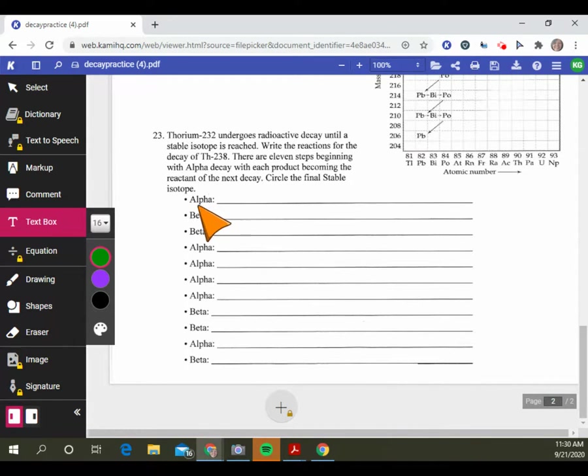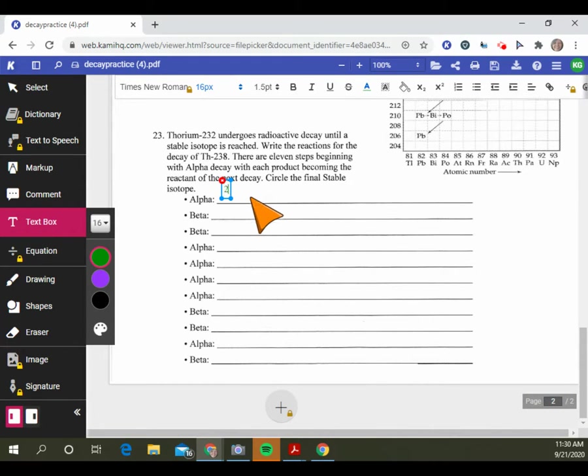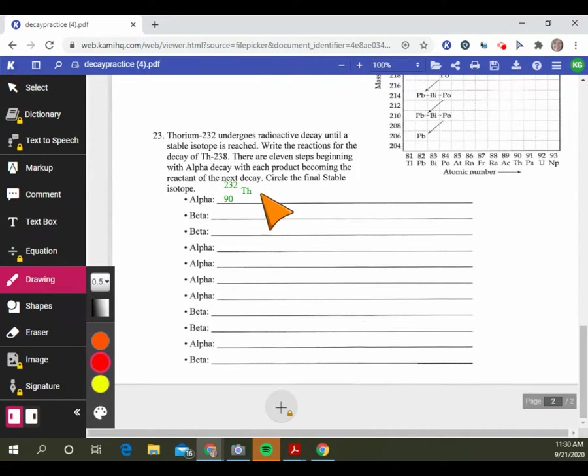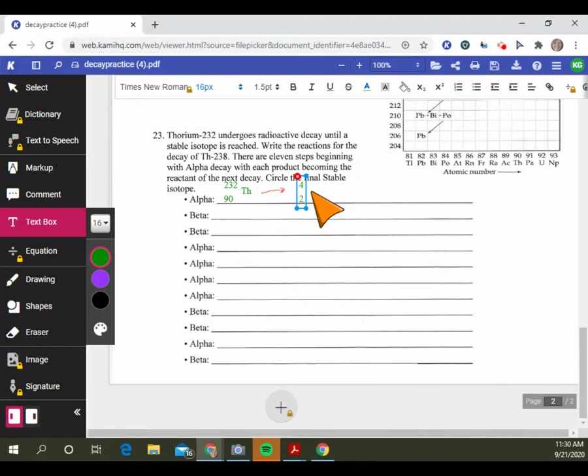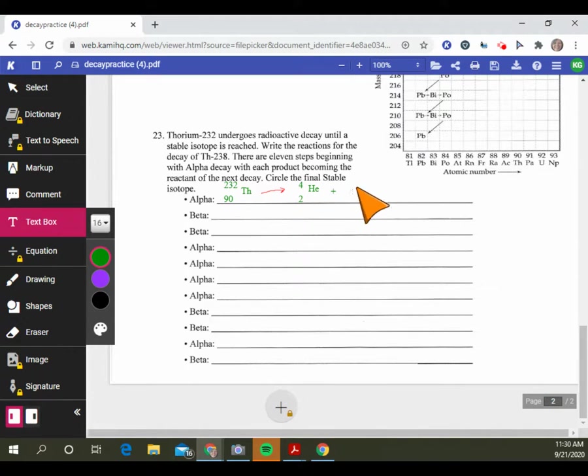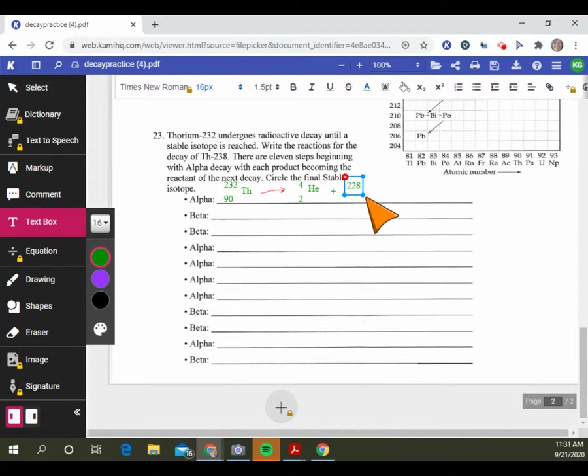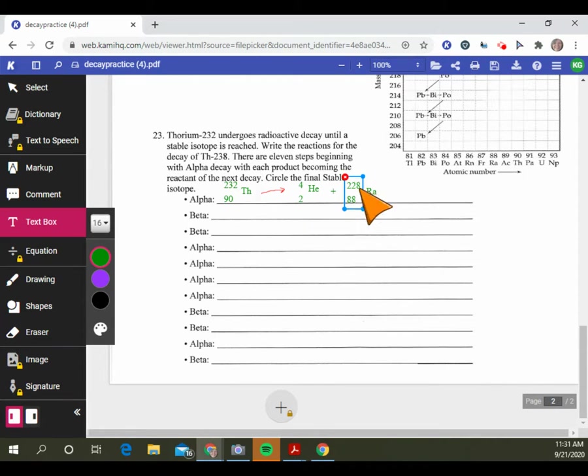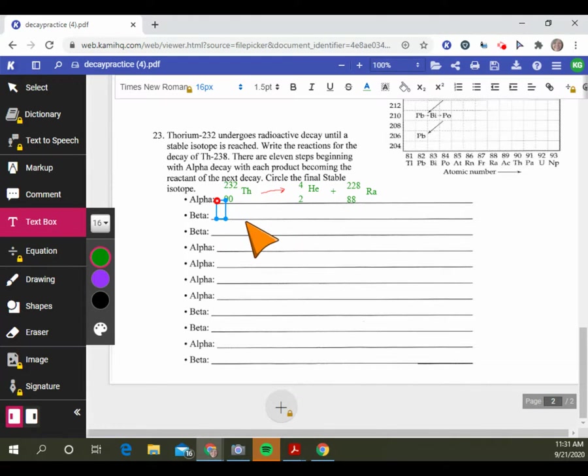If we start here with alpha decay, thorium-232, we'll just do the first line so you get the idea. Thorium-232 undergoes an alpha decay. It's going to become 232 minus 4 is 228, and 90 minus 2 is 88. What element is 88? That is radium. That radium right here is going to start my next line.